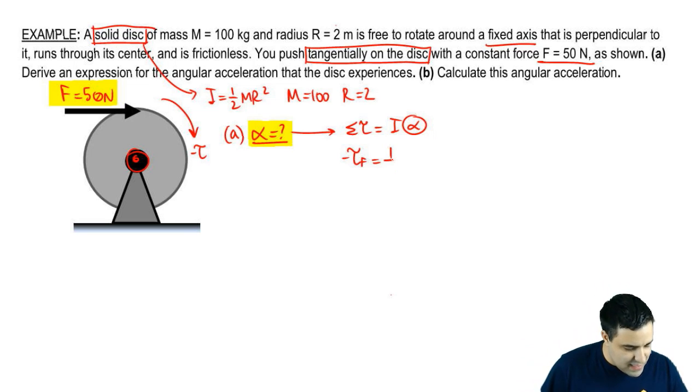The moment of inertia is half MR squared. I'm going to go ahead and write this here. And I'm going to leave alpha alone because that's what we're looking for.